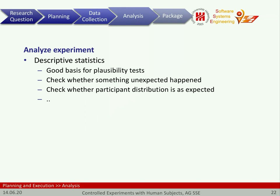Now we analyze the experimental results. The first step is typically to do descriptive statistics. This is a good basis for plausibility tests, so we can see whether there is something which was obviously wrong or did not turn out as expected. We also want to check whether our participant distribution is as we expected it to be and whether some other problems can already be seen. That's the main reason why we do descriptive statistics.